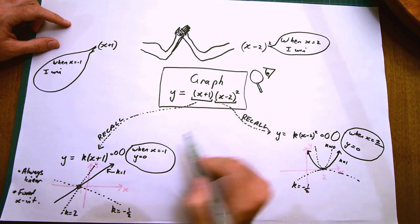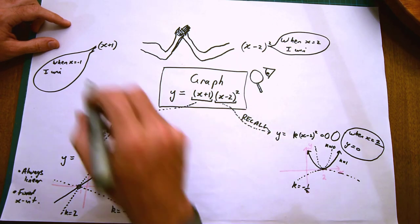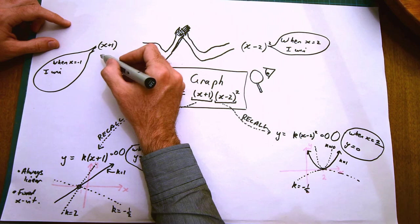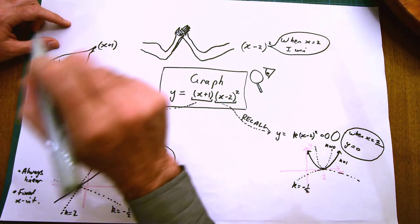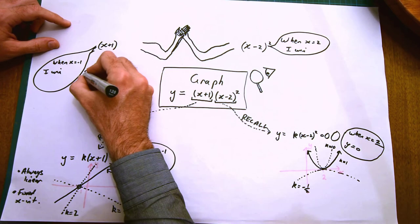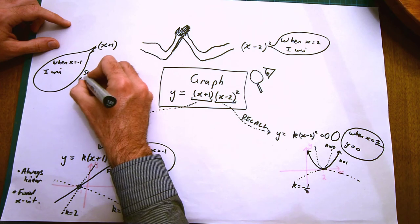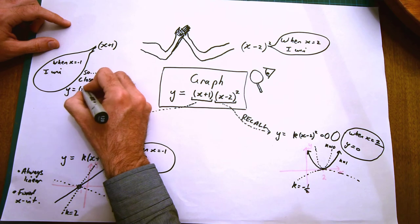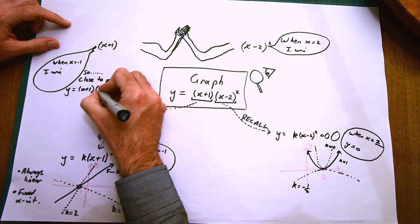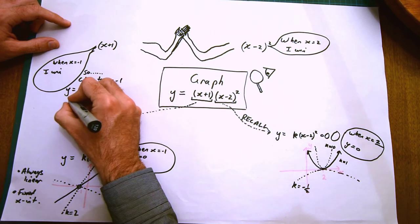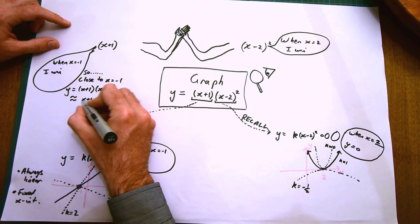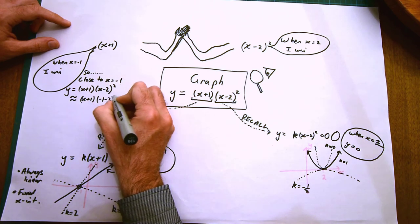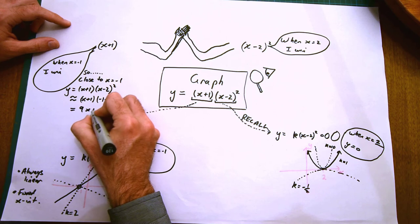When you're close to negative 1, the x plus 1 term is very small. It doesn't matter what the other part of the equation is—the graph will, if you zoom in, look very similar to the graph of a straight line. The x take 2 part becomes approximately constant. If you stay very close to minus 1 and don't change x too much, x does change a bit but not too much, and the x take 2 term is approximately constant.